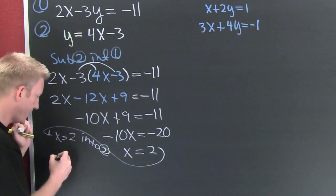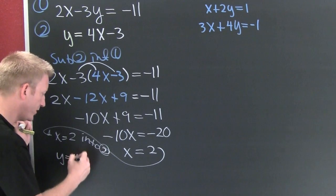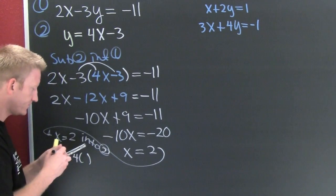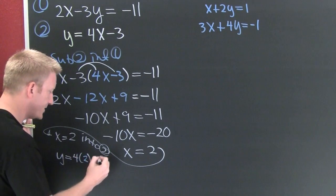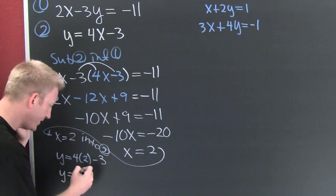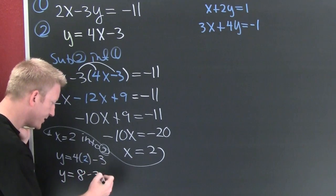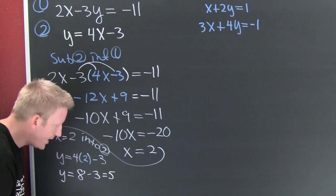Sub it into 2. So then y is equal to 4 times 2 minus 3. And here y is gonna be 8 minus 3 which is gonna get me 5. Very nice.